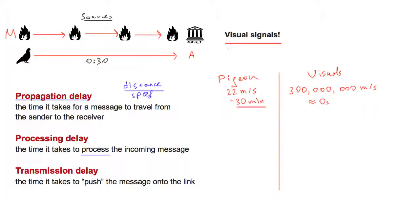Processing delay is interesting. To transmit the visual signal we need multiple relay points along the way. The first person lights a fire; the second person has to identify the message, verify it, and light another fire for the next person to repeat the process. The time it takes to identify and verify the incoming message is the processing delay — let's say 30 seconds. For transmission delay, the person also has to light a fire to signal the next person in line. Let's be optimistic and say it takes 60 seconds to light the fire.